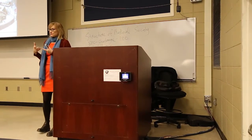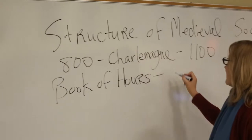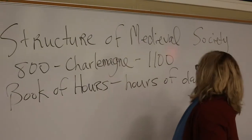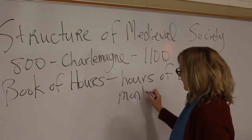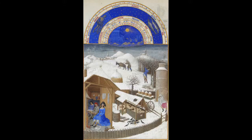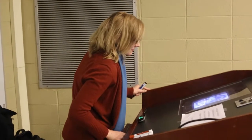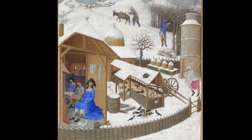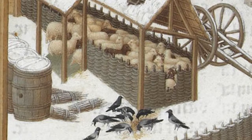The book also has a calendar, so it divides time in terms of Christian prayer and Christian hours, and also according to the month of the year. For each month, there's a little painting that depicts what's happening. So this is February — everyone's in their house, it's cold, you're not doing much. The birds are trying to pick seeds off the ground, and the lambs are all snuggled in their little hut.